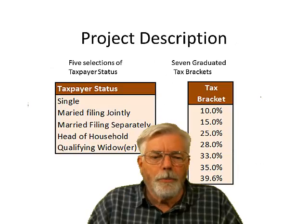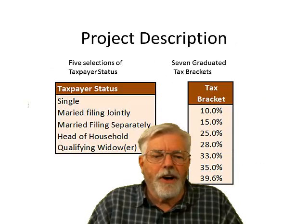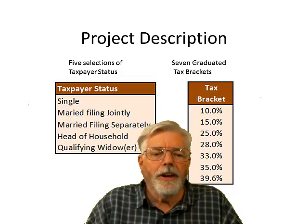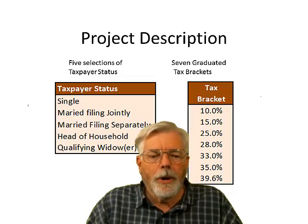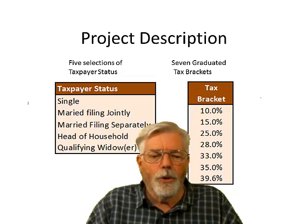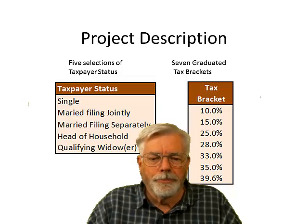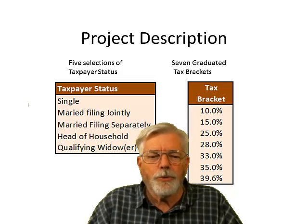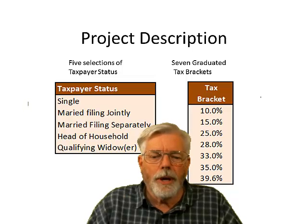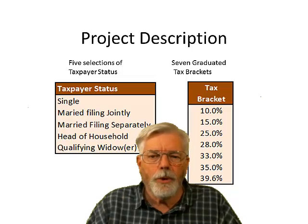There are five selections of taxpayer status: single, married filing jointly, married filing separately, head of household, and qualifying widow or widower. There are seven graduated tax brackets going from 10% all the way up to 39.6%.